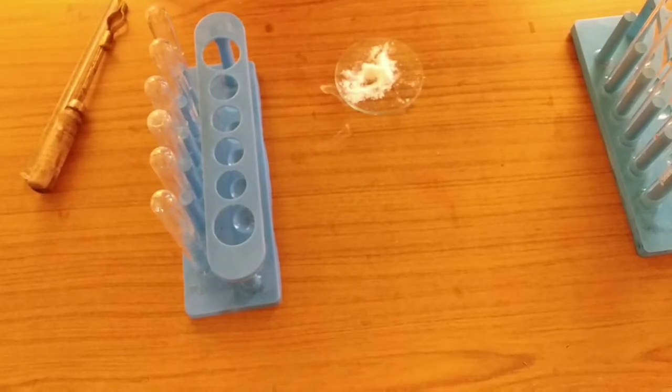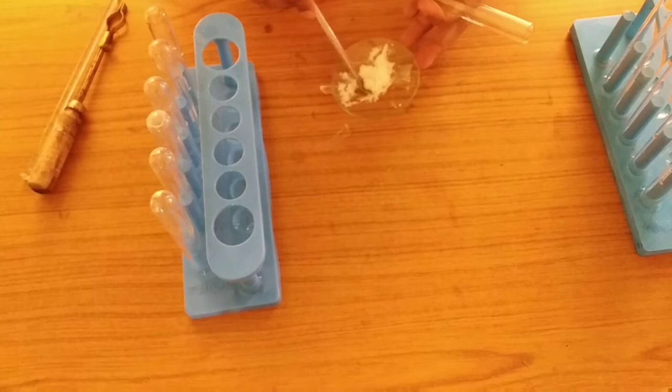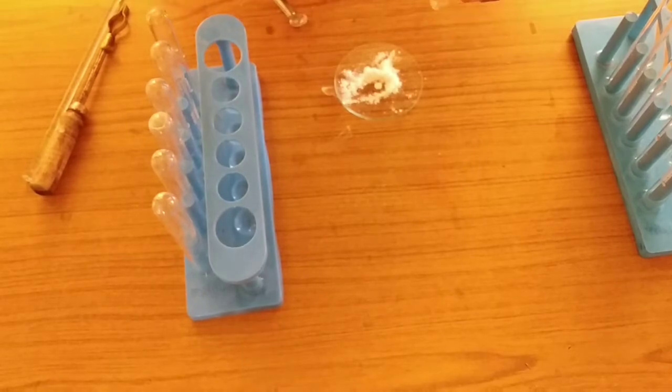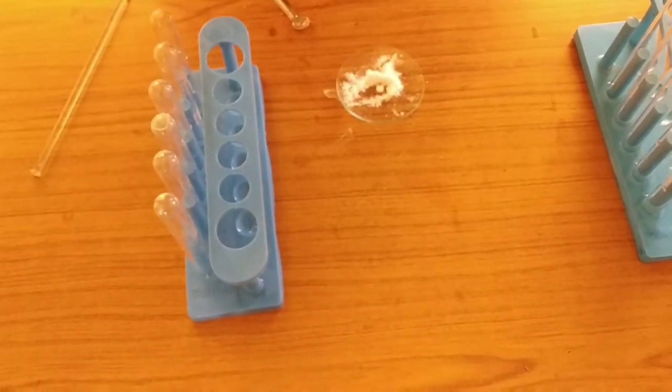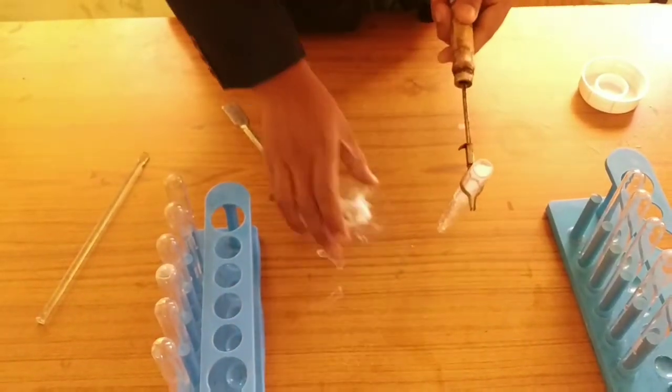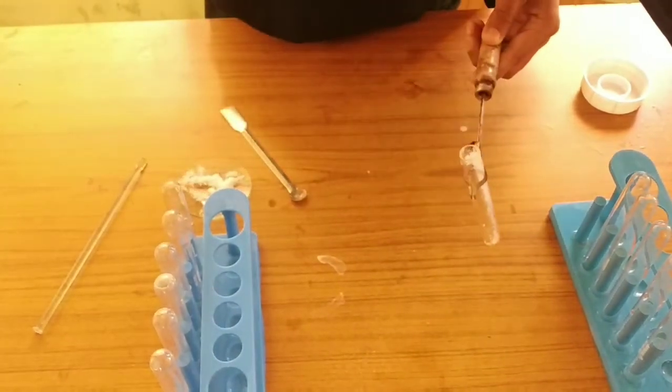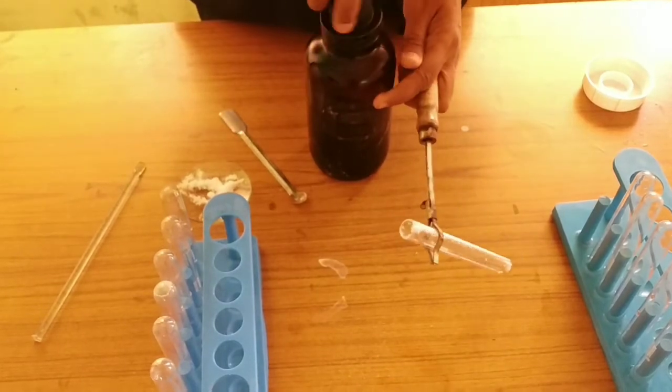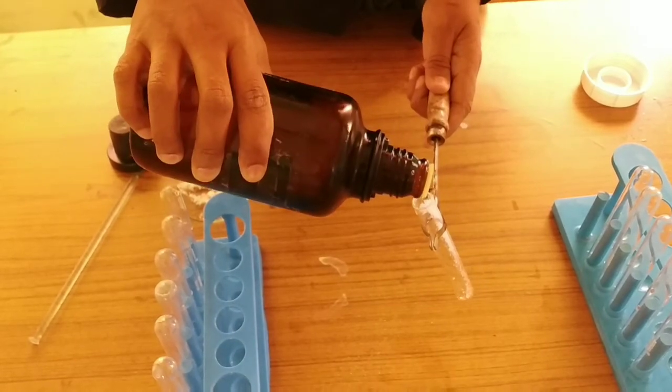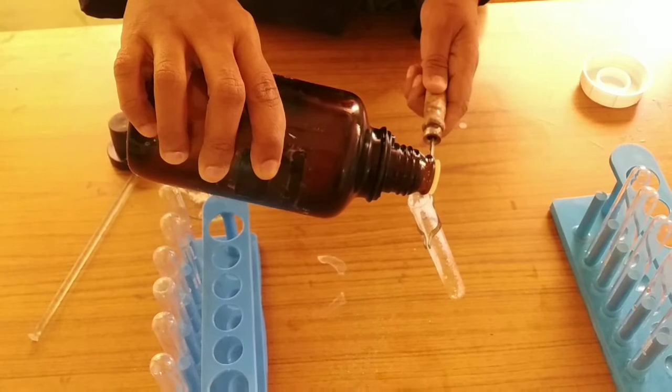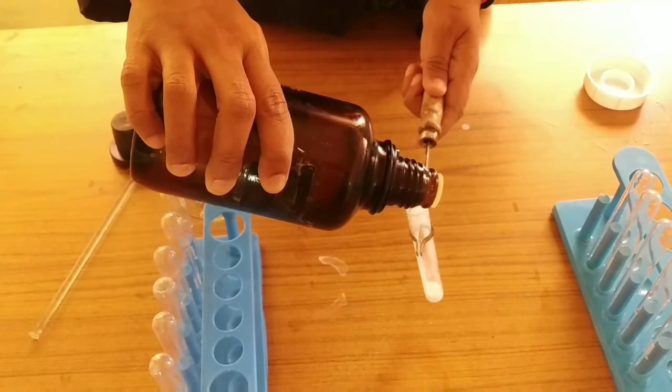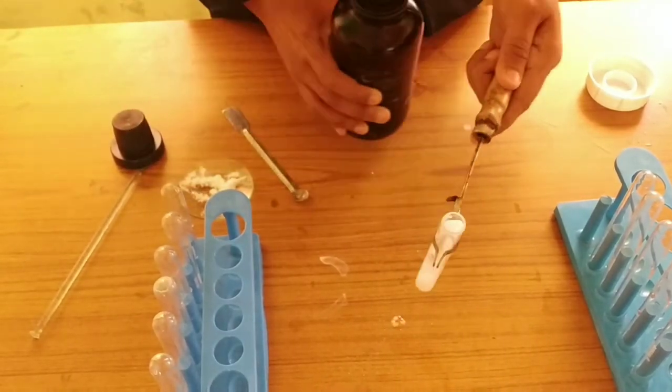For this I am taking one test tube and a spatula. With the help of spatula, I'll pour a small quantity of salt into the test tube. Students, always take a test tube holder. It will be better for you and it is safe also. Now I am pouring concentrated H2SO4. As I explained to you, if colorless pungent smelling gas is evolved, then we say that gas evolved is Cl negative. You can observe that colorless pungent smelling gas is being evolved.